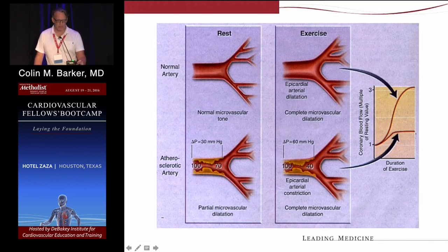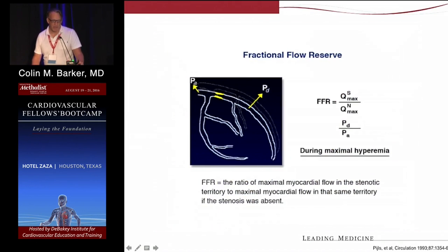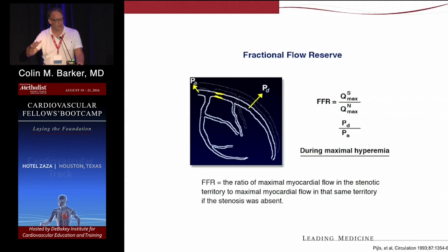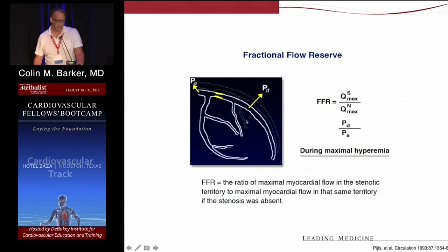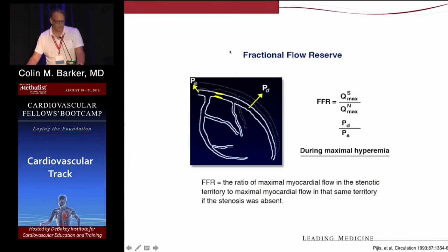Coronary flow is not the same thing as FFR — FFR uses pressure measurements. We get from coronary flow to pressure by giving adenosine. By Ohm's law, if we give adenosine to equalize resistance and coronary venous pressures downstream, then we only need to compare arterial pressures. So in FFR, for example, a proximal LAD lesion at 50 percent — you put in an FFR wire or catheter that measures pressure distal to the lesion and compare it to the guiding catheter proximally to give a ratio ranging from 0.5 to 0.99.